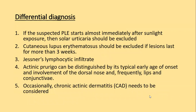Differential diagnosis. If PLE starts almost immediately after sunlight exposure, solar urticaria should be excluded, as solar urticaria is type 1 hypersensitivity and occurs immediately whereas PLE is a delayed hypersensitivity. Cutaneous lupus erythematosus should be excluded if lesions last more than three weeks. Jessner's lymphocytic infiltrate is one of the differentials. Actinic prurigo is distinguished by its typical early age of onset and involvement of the dorsal nose and frequently lips and conjunctiva. Occasionally, chronic actinic dermatitis needs to be considered.